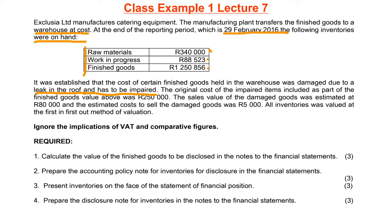Would this write-down be included in cost of sales? The answer is no. The nature of catering equipment is not one that inherently results in a leaking roof — a leaking roof is not part of the normal business of catering equipment. So this write-down would not be included in cost of sales; it goes to other expenses.